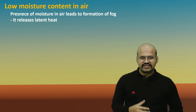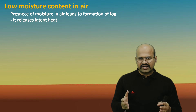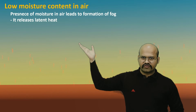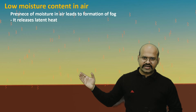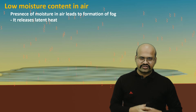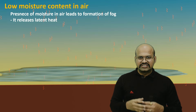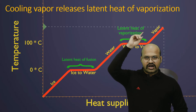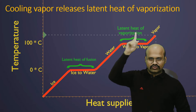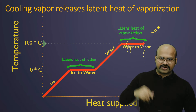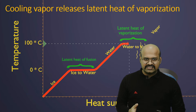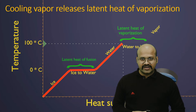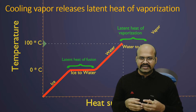The third condition is that the air should be dry, with low moisture content. If the air in contact with the cooling land is moist, the moisture will condense — changing from vapor to liquid or fog. During condensation, latent heat of vaporization is released into the atmosphere, which increases temperature and reduces the cooling effect. Therefore, dry air is an important condition for radiation inversion.